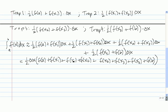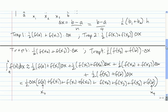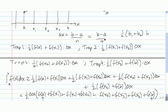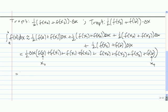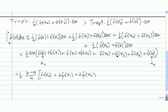We notice we have two f of x sub 1's, two f of x sub 2's, and two f of x sub 3's. It's common to write a as x sub 0 and b as x sub n, which in our case is x sub 4. Since delta x equals b minus a over 4, cleaning this up we have one half times b minus a over 4, times f of x sub 0 plus 2f of x sub 1 plus 2f of x sub 2 plus 2f of x sub 3 plus f of x sub 4.